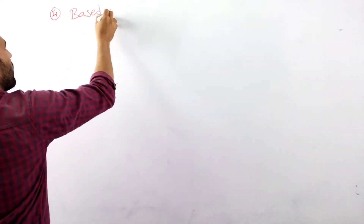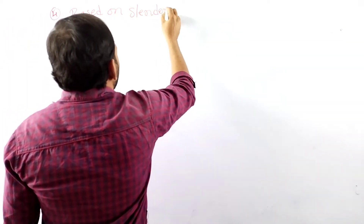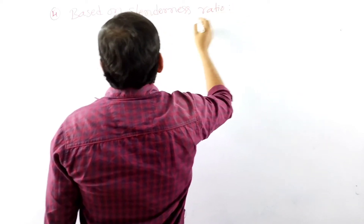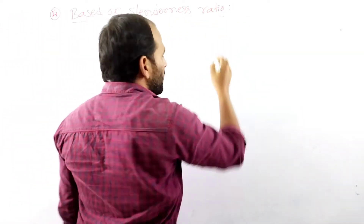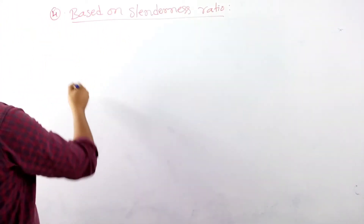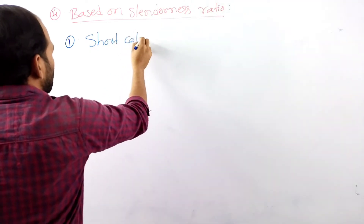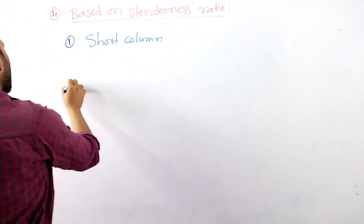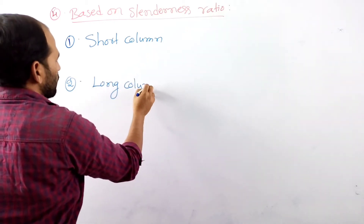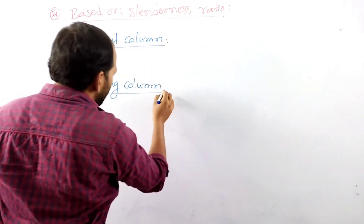Based on slenderness ratio, the column is classified into two types: number one is short column, and number two is long column.